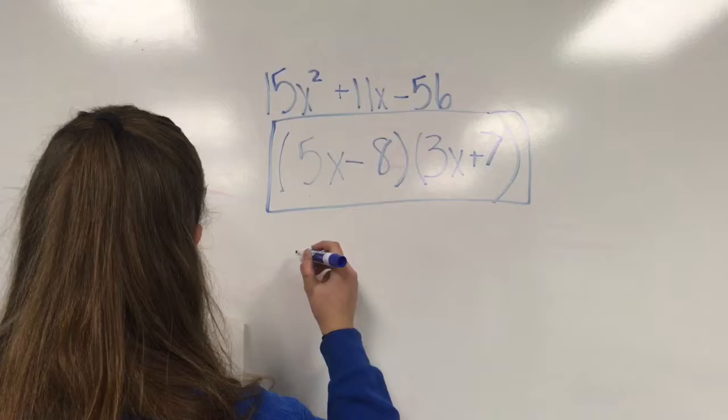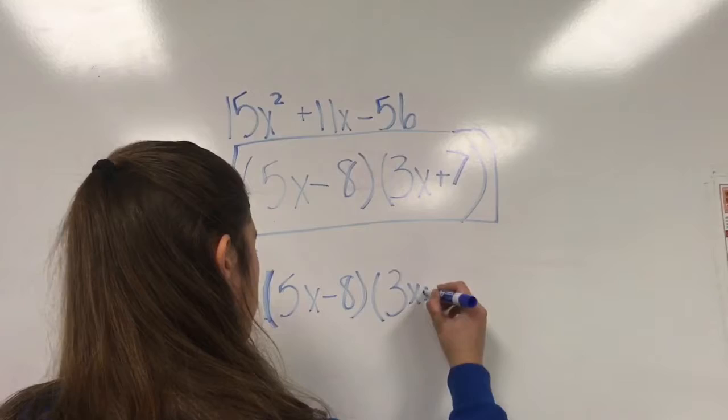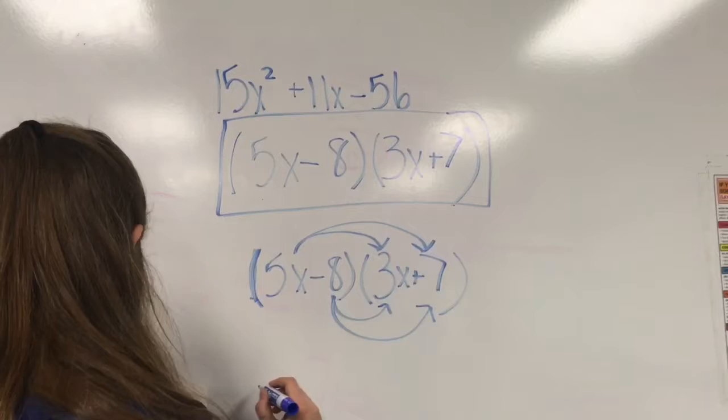To do so, we will take 5x minus 8 times 3x plus 7 and multiply it out. We'll take 5x times 3x, 5x times 7, negative 8 times 3x, and negative 8 times 7.